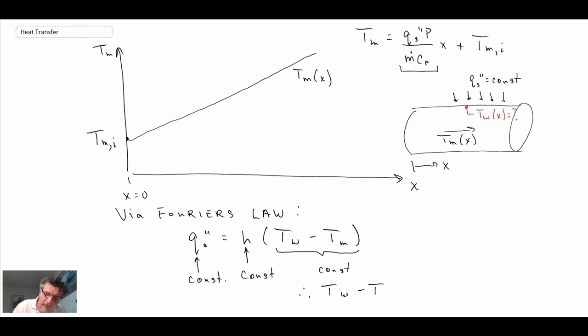So T_wall minus T_m is equal to a constant. And so if we look back at our plot, so if we take this and bring it up here, what that tells us is that the wall temperature has to be a constant amount larger than the bulk temperature, and it as well will be a linear variation.